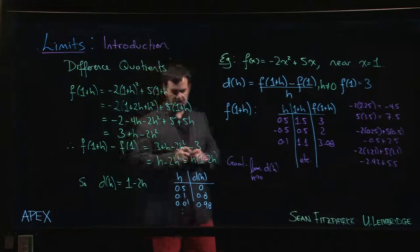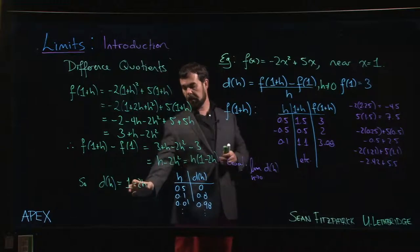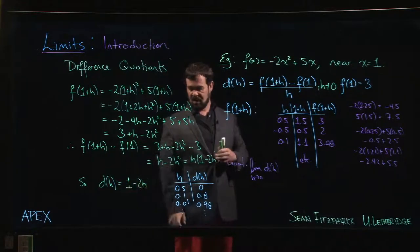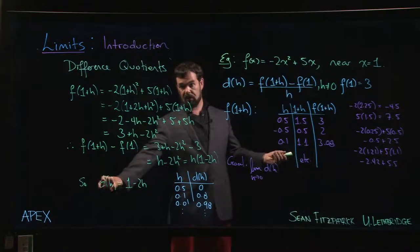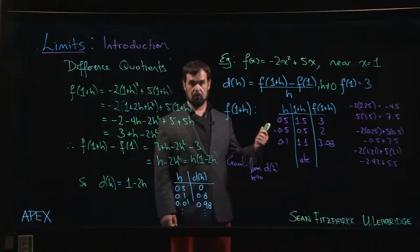And a reasonable person might conclude - and I mean, you can look at the function here and see - that as H gets closer and closer to 0, this difference quotient is going to get closer and closer and closer to 1.